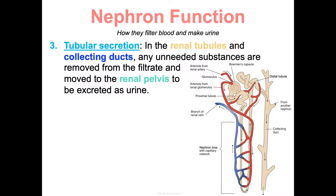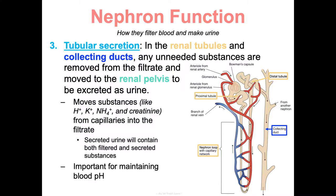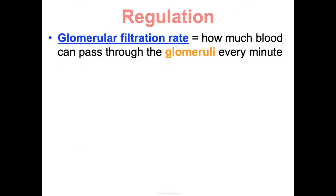Step three is tubular secretion, also in the renal tubules and collecting ducts. Unneeded substances are removed from the capillaries — things like hydrogen ions, potassium, ammonium, and creatinine — moved into the filtrate, and then excreted as urine. Final urine contains both filtered and secreted substances. This process is really important for maintaining our blood's pH.